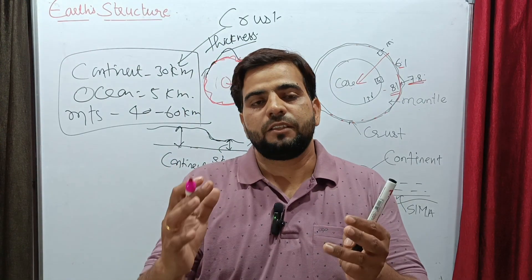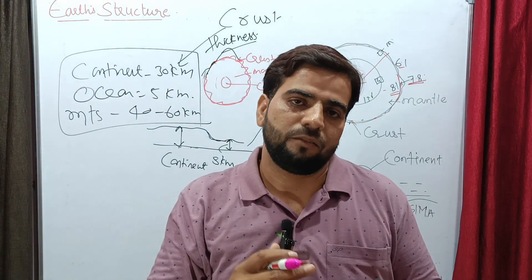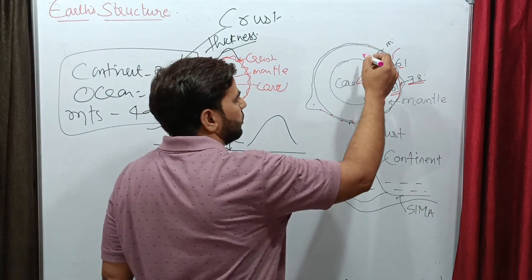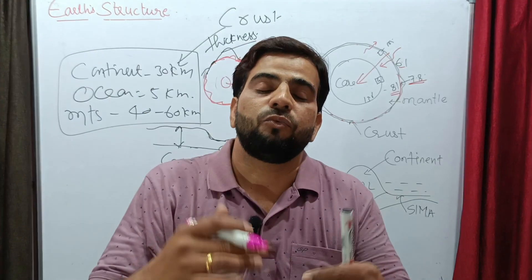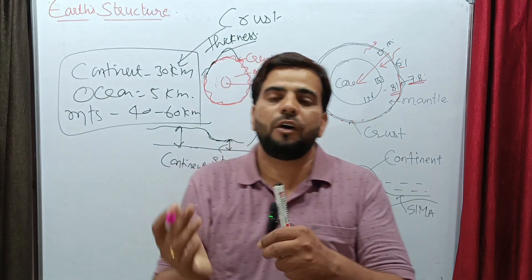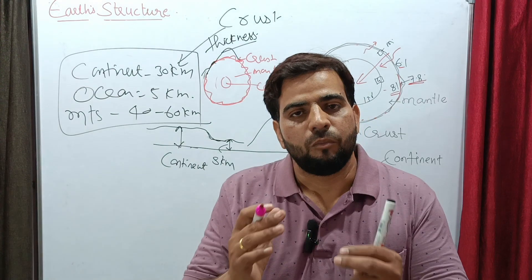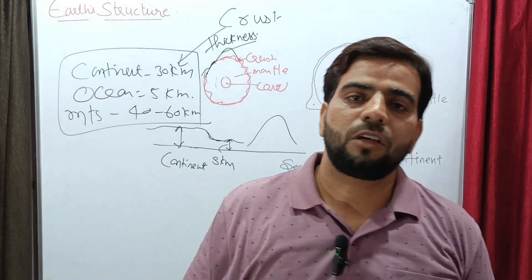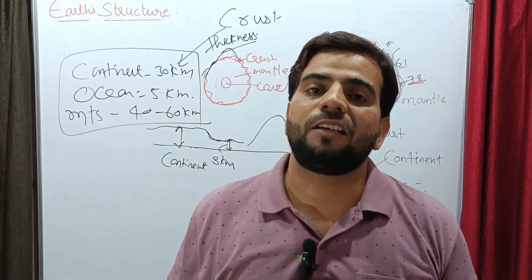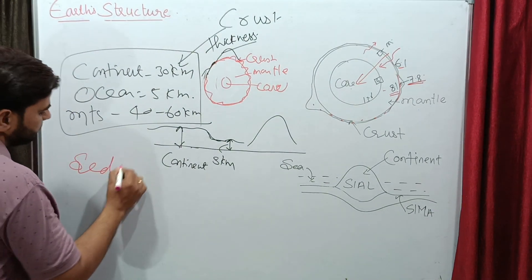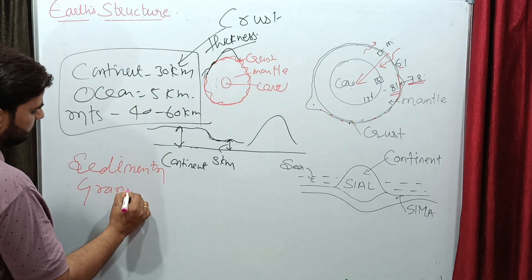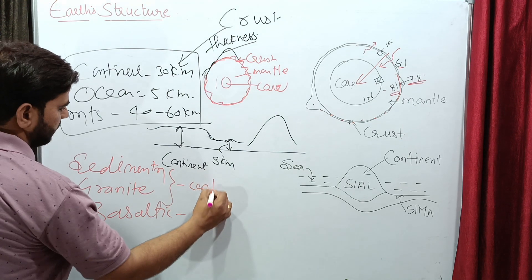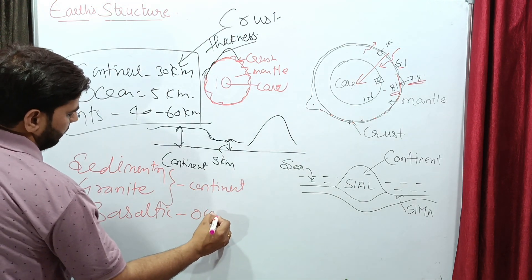The speed of primary waves varies as they travel from crust toward mantle and back — it changes due to variation in density, which is called the Moho discontinuity. The crust is made up of sedimentary, granite, and basaltic rock. Sedimentary and granite rocks form the layer of the continent, while basaltic rock forms the bottom of the ocean.